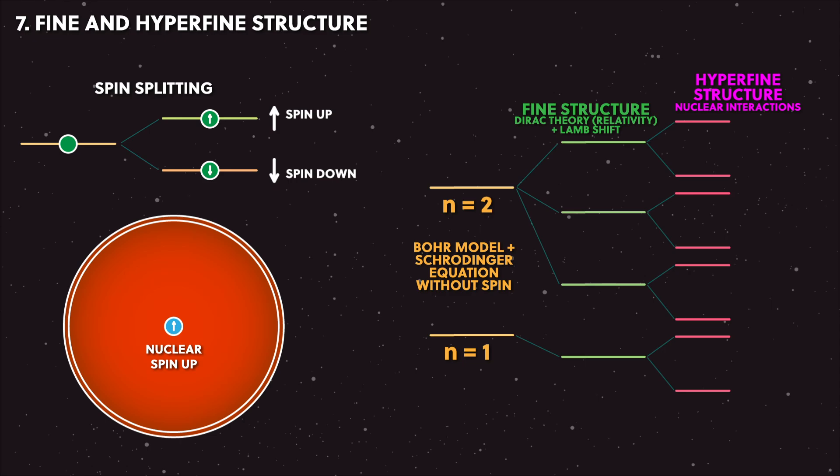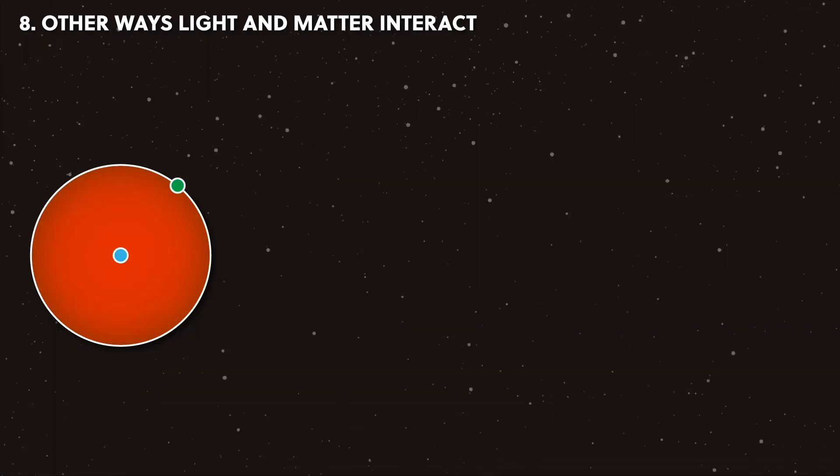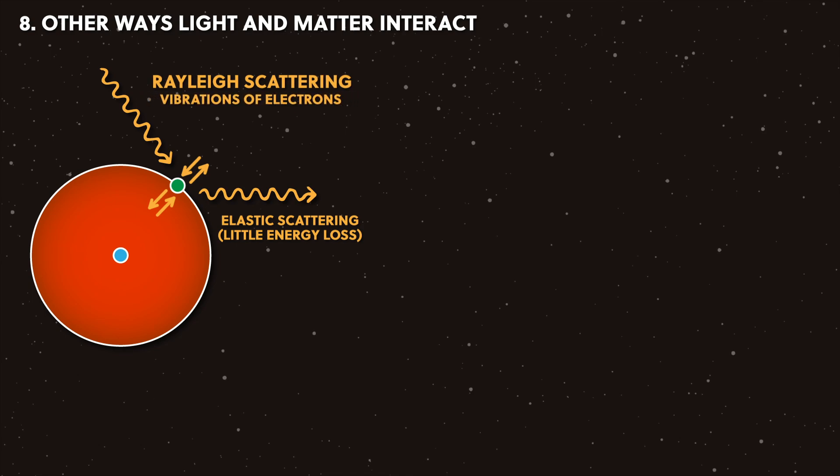Now it's important to note that what I've described so far isn't the only way that light interacts with matter. There are a few other ways that you should know about. The most common is scattering, which happens when electrons are free to wiggle about when light shines on them, called Rayleigh scattering. You don't need the rules of quantum physics to describe this—it's a classical effect of light being a vibrating electromagnetic wave which interacts with the electric charge of the electrons, causing them to wobble.